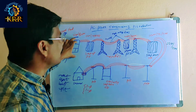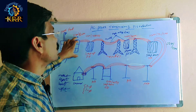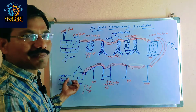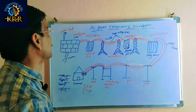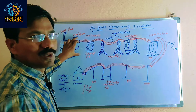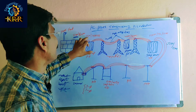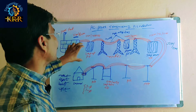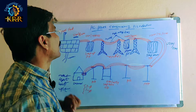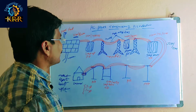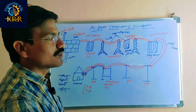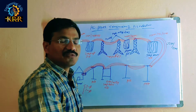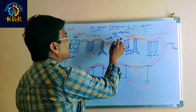In a thermal power plant, the generating voltage is 11kV. This 11kV voltage is stepped up to 400kV using a step-up power transformer. With the help of transmission towers, this 400kV is transmitted over several kilometers. Then at a substation, the 400kV voltage is stepped down to 132kV.